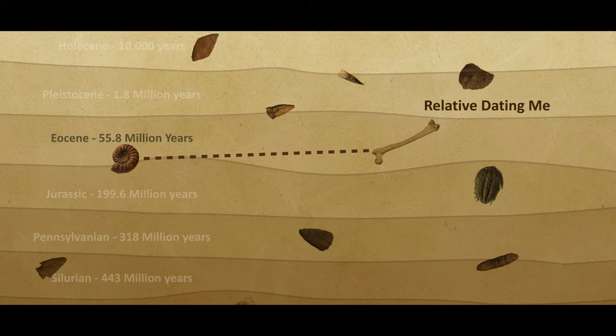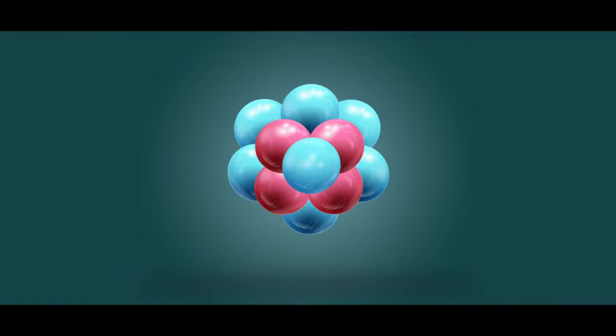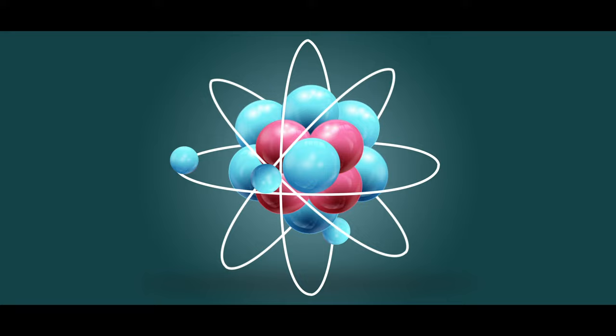The other method is the absolute dating method. Using this method, archaeologists are able to determine the numerical age of the fossil itself. We know that all elements are made of atoms. In order to understand this method, we need to go a little deeper into these atoms. Let us take the element carbon, for example.